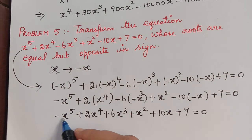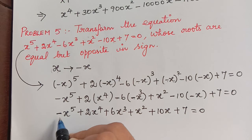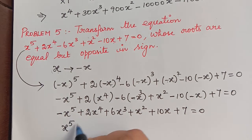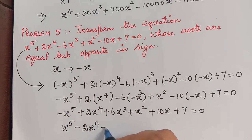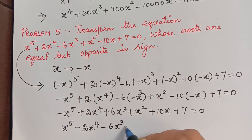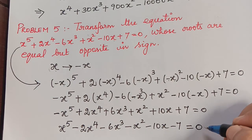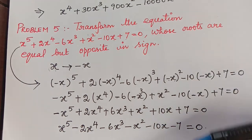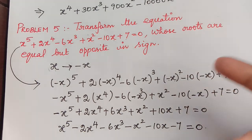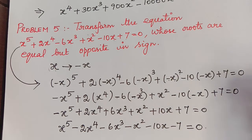In order to have a positive leading term, we multiply the entire equation by −1. This gives x⁵ − 2x⁴ − 6x³ − x² − 10x − 7 = 0. So this is the transformed equation with roots that are opposite in sign to the original. Hope you have understood all the problems under type 1. In future videos we will learn how to diminish or increase a root.